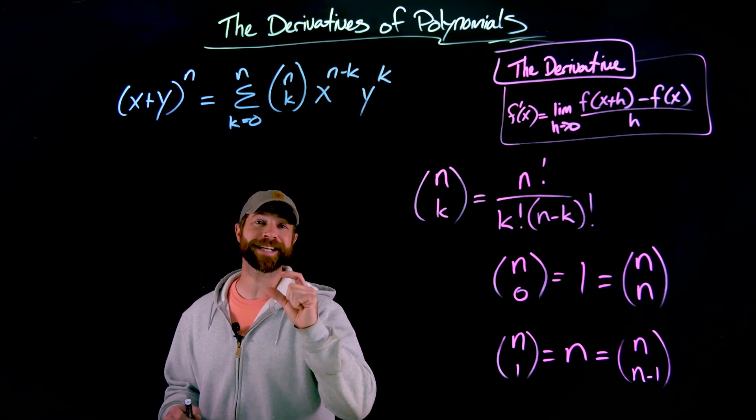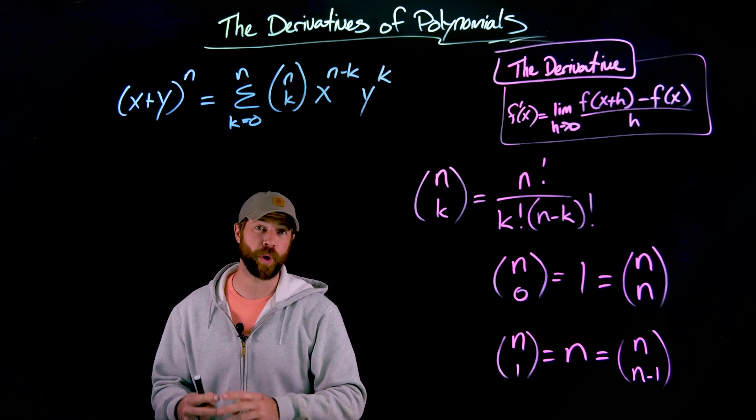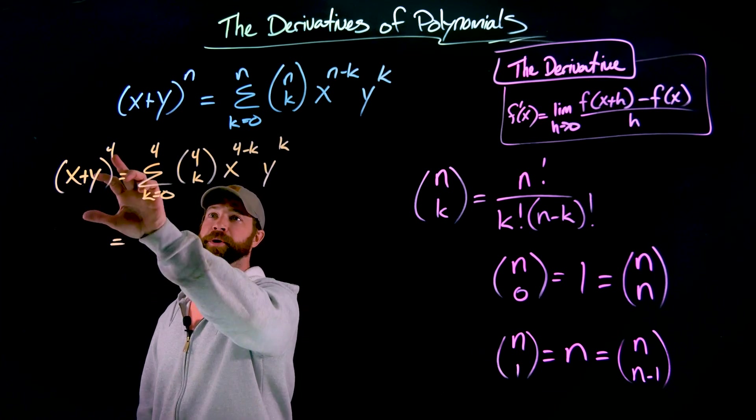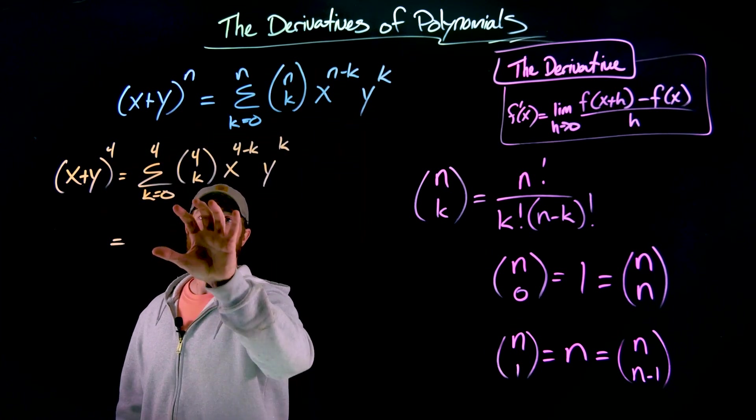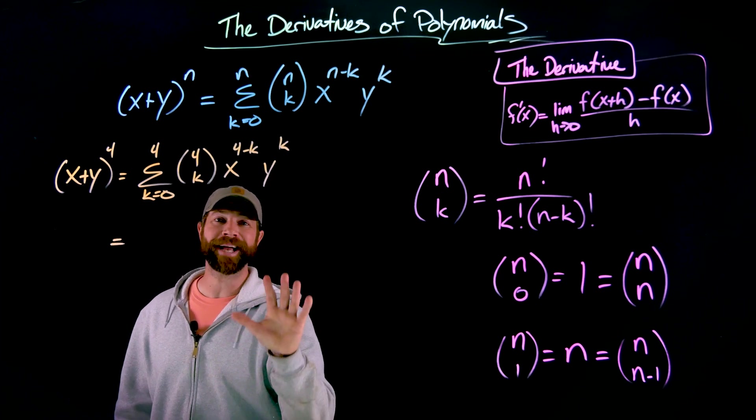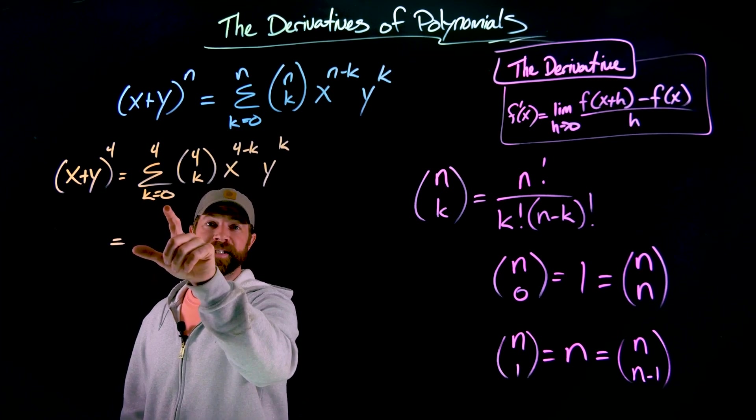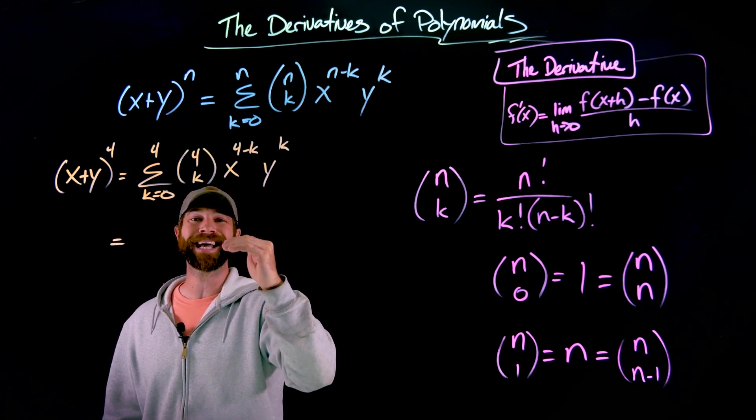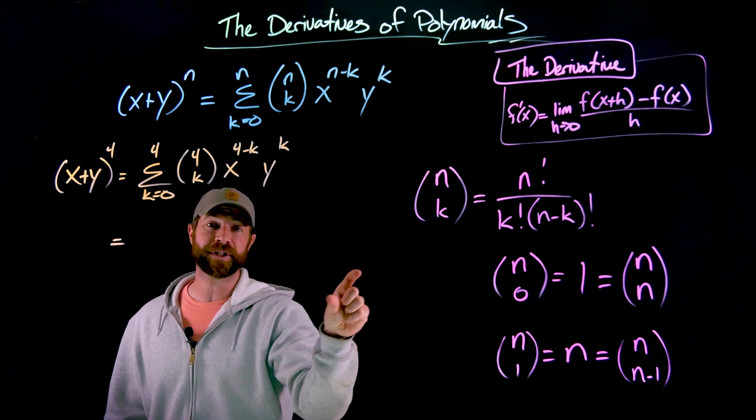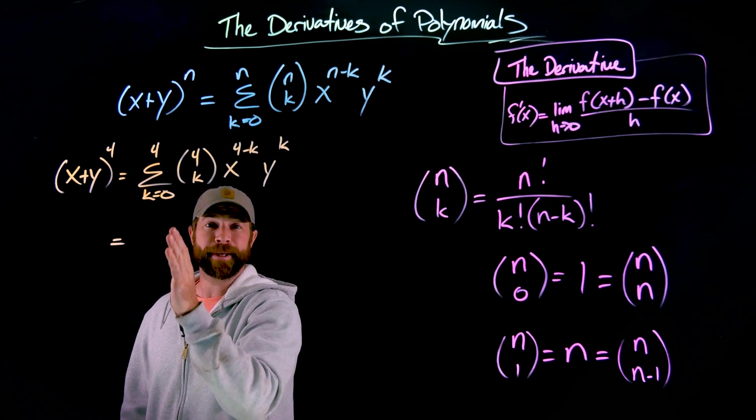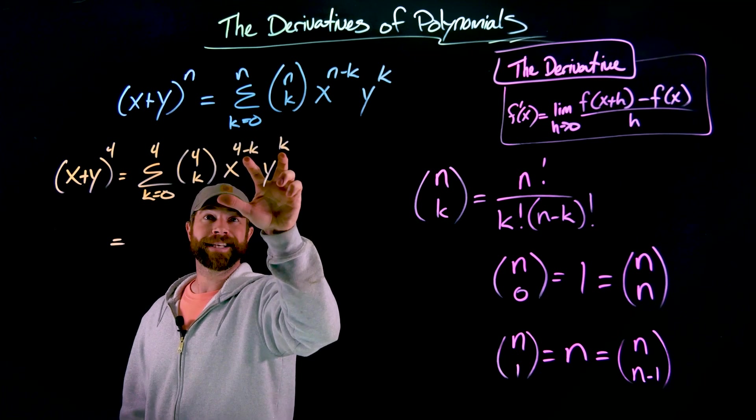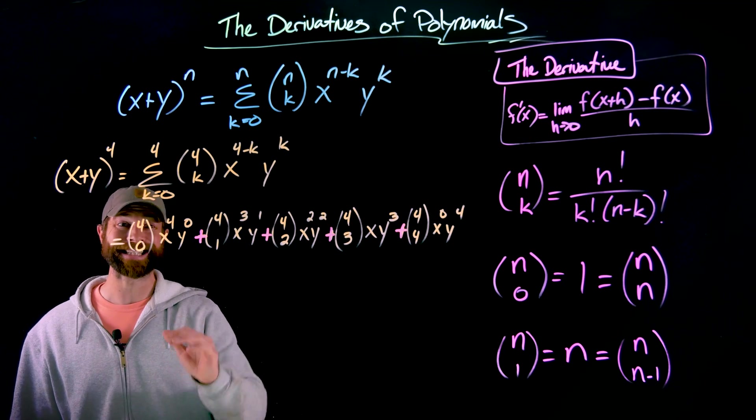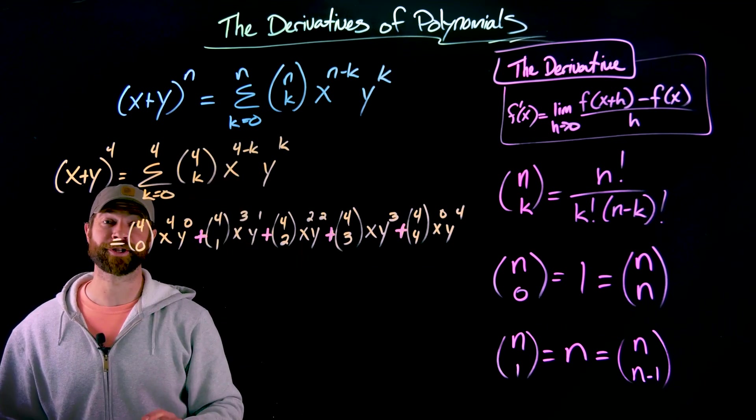Let's expand x plus y to the fourth power. So my first step was simply replacing the n's in this expression with 4. This will now produce five different terms. Starting with the k value of 0 being plugged through for the first term, then going to 1, then to 2, then to 3, and then to 4. It will produce a string of terms where this choose statement will be the coefficients. And these, the exponents will be determined by the k value.